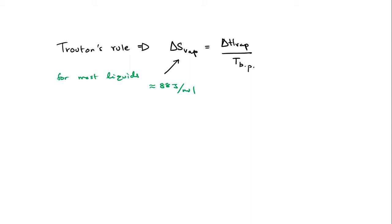When water boils and goes into its gaseous phase, because all those hydrogen bonds have now been broken, the change in entropy is going to be much larger. For example, if you're going from a super ordered, very neat, very clean room and you totally mess it up, that change in its state is huge. But if you're going from an already disorganized room to just a more messy room, that change is not that great.